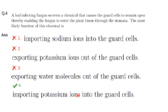Since sodium and potassium ions are mentioned, this relates to the K+ ion theory of stomatal opening and closing. Opening is caused by absorption of water into guard cells, mainly regulated by K+ ion concentration. During opening, large amounts of K+ ions accumulate in guard cells, increasing solute potential and reducing water potential, causing water to enter and making cells turgid. So the chemical functions by importing potassium ions into guard cells — option 4 is the answer.